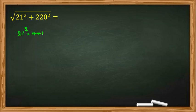21 squared is 441. You should memorize square numbers less than 1,000. 220 squared is 22 squared, which is 484, and then 10 squared is 00.